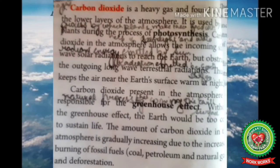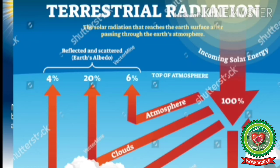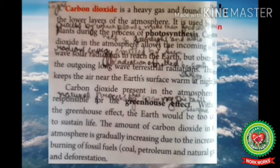Carbon dioxide is a heavy gas found only in the lower layers of the atmosphere. It is used by plants during photosynthesis — the process in which plants make their food with the help of sunlight and water. Carbon dioxide in the atmosphere allows incoming short-wave solar radiations to reach the earth, but obstructs the outgoing long-wave terrestrial radiation — radiations emitted by the earth's surface. During night, after sunset, insolation ceases but the earth's surface continues to radiate heat energy, so the atmosphere is heated by terrestrial radiation.